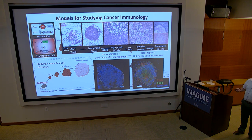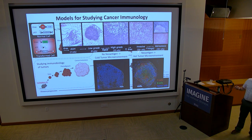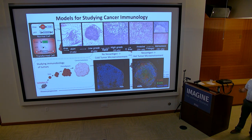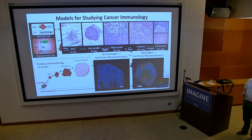One thing we noted was that if we don't put T cell neoantigens into these tumors, the tumor microenvironment is relatively cold — no T cells, no B cells, no lymphoid cells in the tumors. But if we put in a simple neoantigen — in this case an ovalbumin peptide — now you get a bunch of CD8 T cells, B cells, and CD4 T cells infiltrating the tumor. So you can turn a cold tumor hot and study what those CD8 and CD4 T cells are doing.